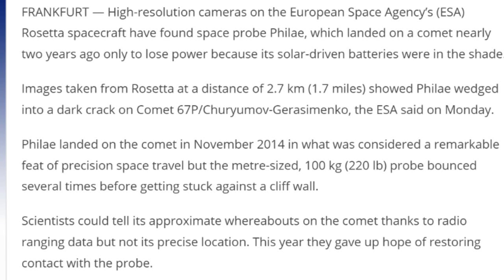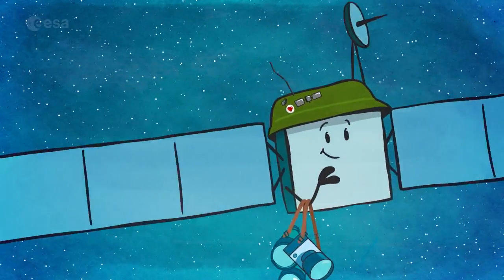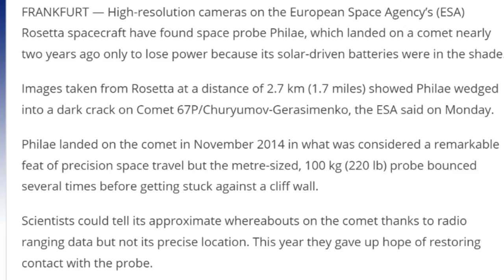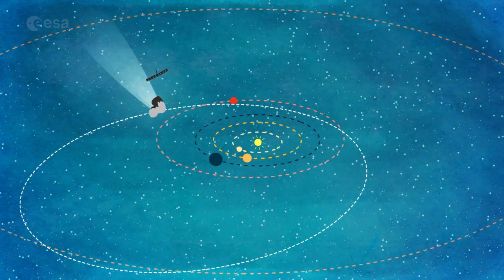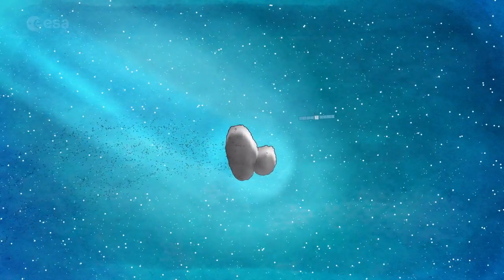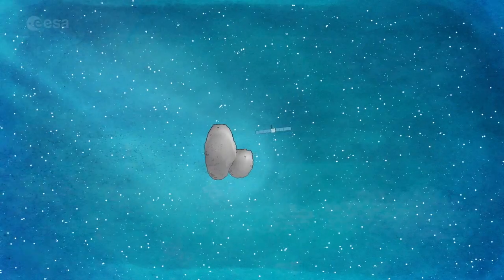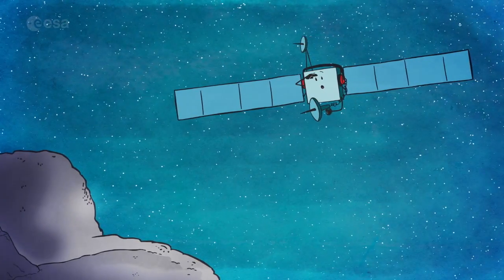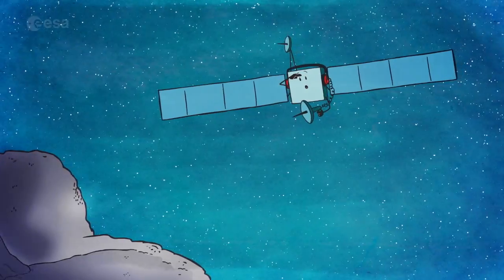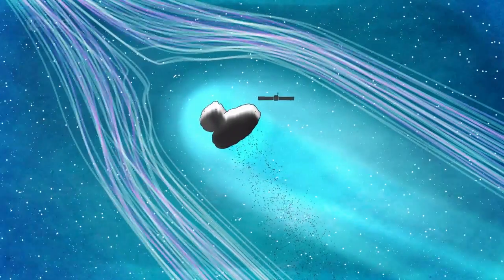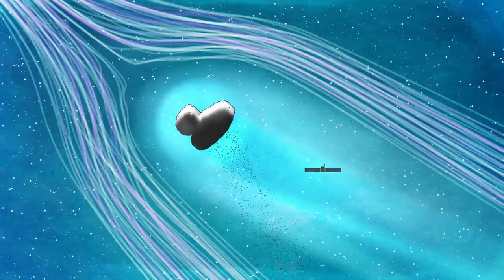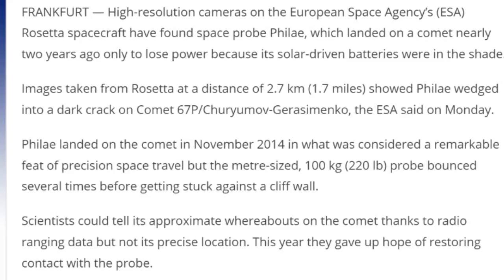High resolution cameras on European Space Agency's Rosetta spacecraft found a space probe, but Philae was landing on a comet nearly two years ago, only to lose power. What reason did they give? It's solar driven, batteries were in the shade. Usually if you're in the shade you're made. I'm in the shade, I'm made in the shade. But for Philae, he got the dark crack of darkness. Let's remind scientists that when Philae landed on the comet in November 2014, in what was considered a remarkable feat of precision space travel...